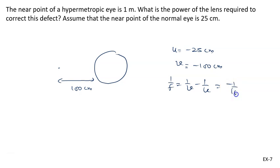Equal to 1 upon v, that is minus 1 by 100, minus 1 upon u. u is negative, so minus minus becomes plus 1 upon 25. So 1 by f equals, with LCM 100, minus 1 plus 4, which gives 3 by 100. So focal length is given by 100 by 3 centimeter.